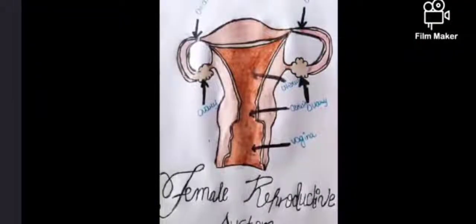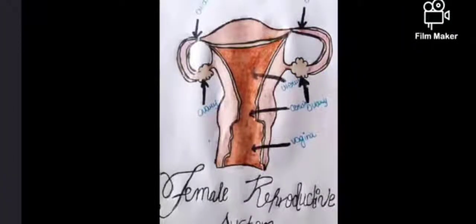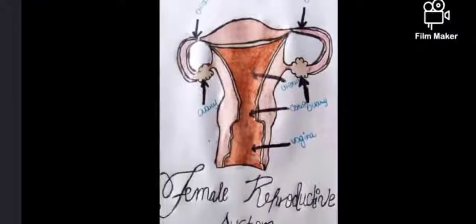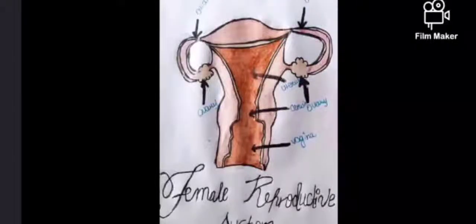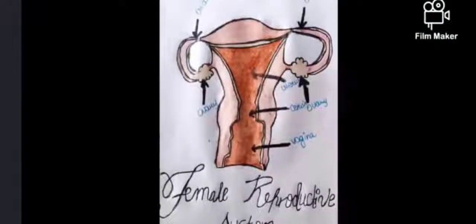The main functions of the female reproductive system are to produce eggs, receive sperm, provide the site for fertilization, support implantation of the growing embryo and development of the fetus, and produce hormones that control the various stages of ovulation and maintenance of pregnancy.